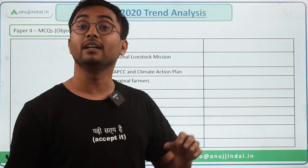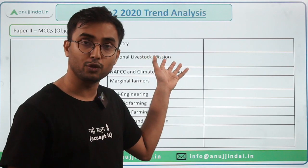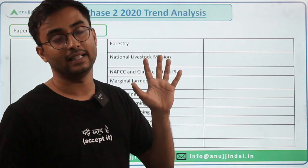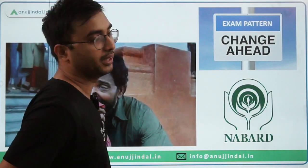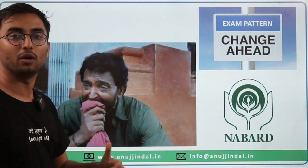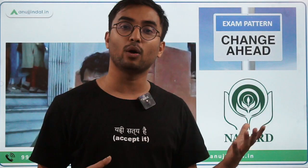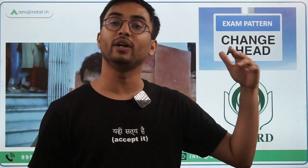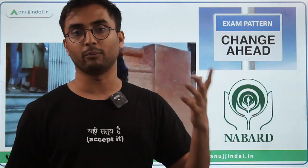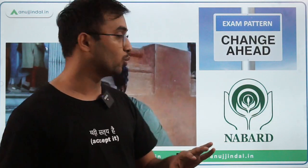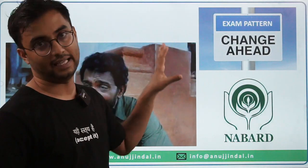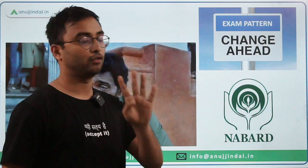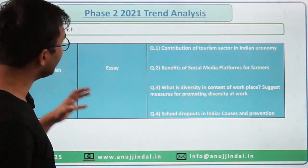In 2021, the exam pattern was changed significantly. Total objective questions were reduced from 65 to 30 — 20 questions for two marks and 10 questions for one mark. The remaining 50 marks came from descriptive answer writing for both ESI and ARD. From six questions, you had to write four. This was the major exam pattern change.